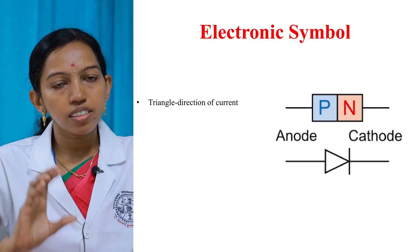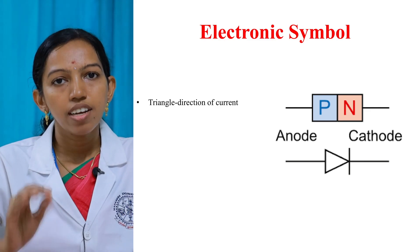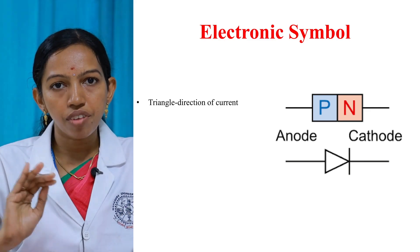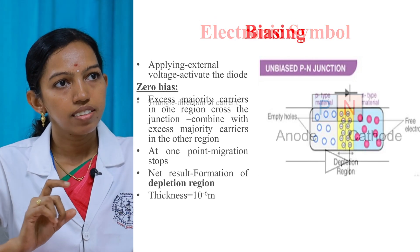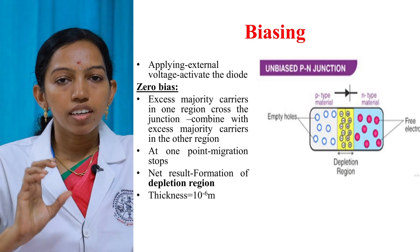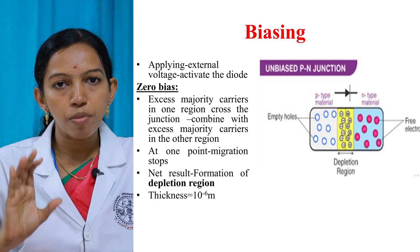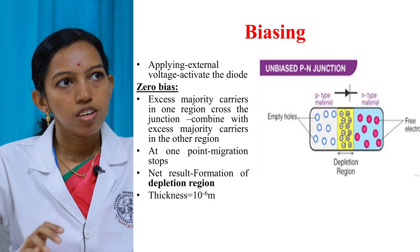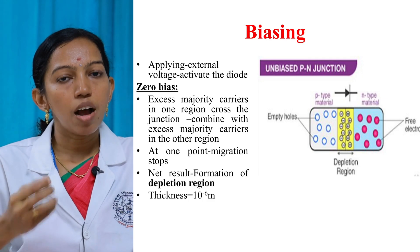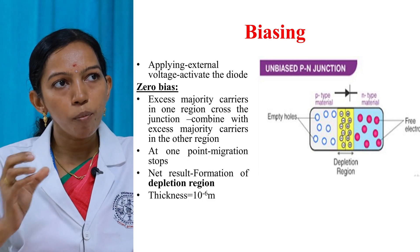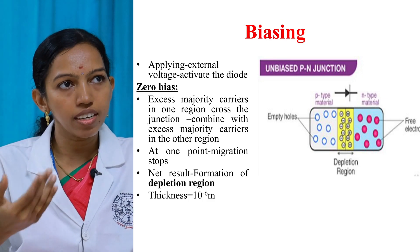The P-N junction diode allows current flow in a single direction, indicated by the triangle symbol. The diode can be operated only under proper biasing conditions. Biasing is applying a proper external voltage so as to activate or operate the diode.